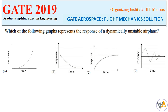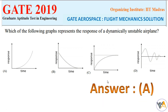Last question: which of the following graphs represents the response of a dynamically unstable airplane? A dynamically unstable airplane will exhibit undamped oscillations that grow over time. From this understanding, the correct answer is option A.